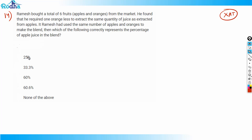So the question says he bought a total of six fruits, meaning apples plus oranges equals six. He found that he required one orange less to extract the same quantity of juice as extracted from apples. We have five options here.